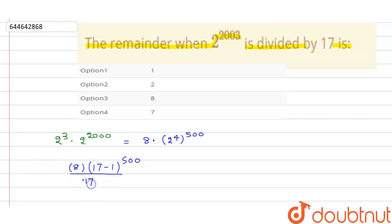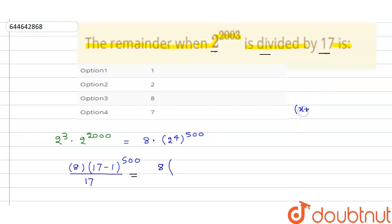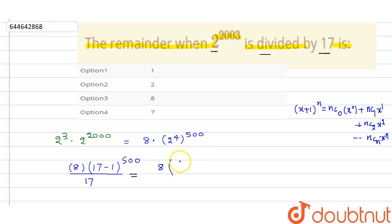We are writing divided by 17 because we need to find the remainder and we are dividing 2 to the power 2003 by 17. Now take common 8 and expand (17 minus 1) to the power 500. We know the expansion of (x + 1) to the power n equals nC0 x^0 plus nC1 x^1 plus nC2 x^2, up to nCn x^n.